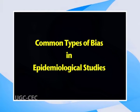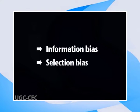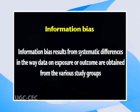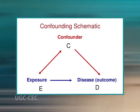More than 50 types of bias have been identified in epidemiological studies, but for simplicity they can be broadly grouped into two categories: information bias and selection bias. Information bias results from systematic differences in the way data on exposure or outcome are obtained from the various study groups. This may mean that individuals are assigned to the wrong outcome category, leading to an incorrect estimate of the association between exposure and outcome.